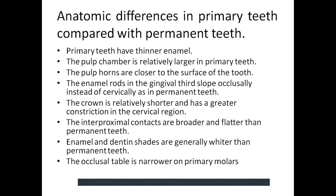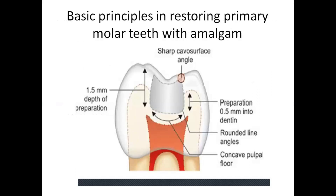Now there are certain basic principles in restoring a primary molar with amalgam. The preparation depth is 0.5 mm into the dentine. As you can see here, on the primary molar the depth of the preparation is approximately 1.5 mm. Number 330 and number 245 burs are common for preparation of primary teeth. The number 330 is 1.5 mm in length and number 245 is 3 mm. These burs aid the practitioner in establishing the proper depth of the preparation.